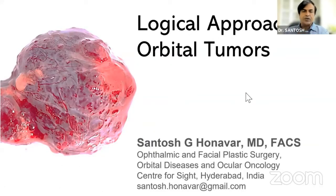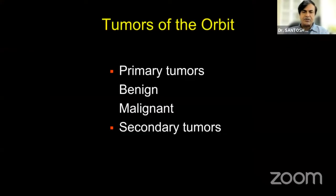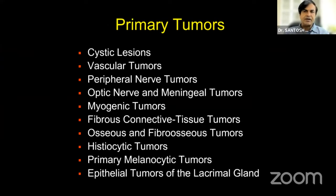Good afternoon. I'll be talking about a logical approach to orbital tumors. I'll be covering the tumor part of it — Lakshmi has already covered infection and inflammation very beautifully. I'll show you pictures as well as talk some theory on each of those. This is a simple classification of orbital tumors: primary and secondary. Primary can be further classified as benign and malignant, and secondary are almost always malignant.